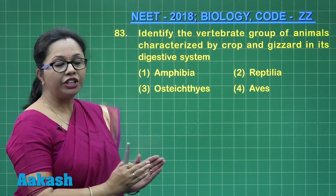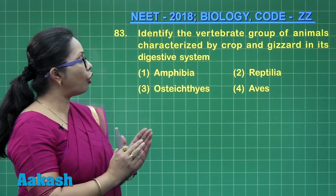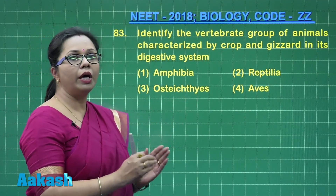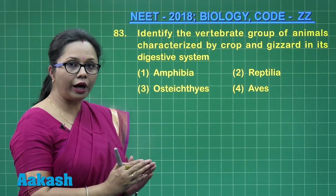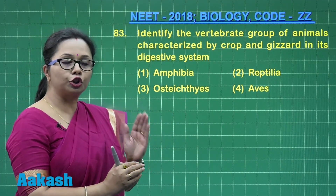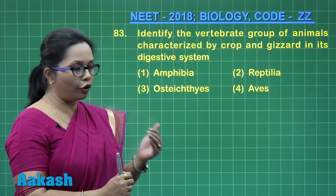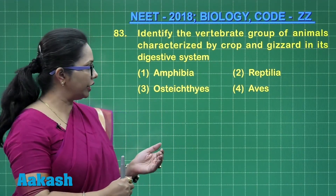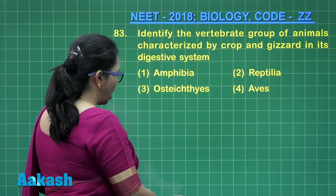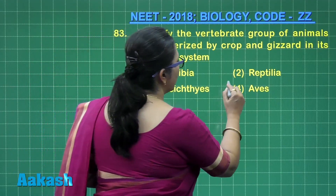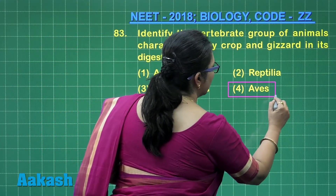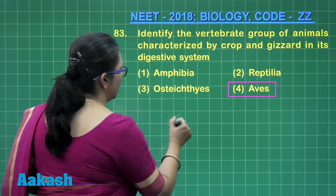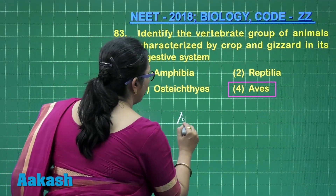These two extra structures are characteristic of the digestive system of birds. In the case of the crop, food is temporarily stored and softened, and in the gizzard it is pulverized.